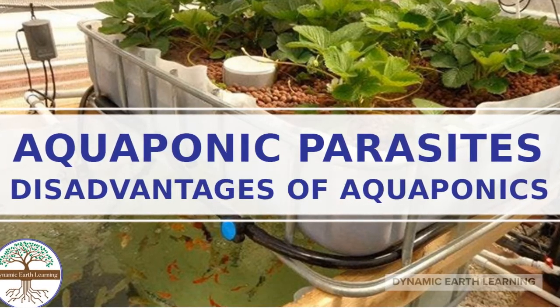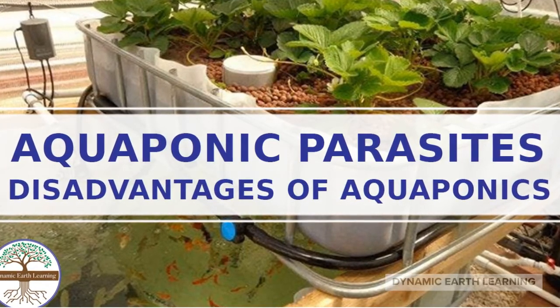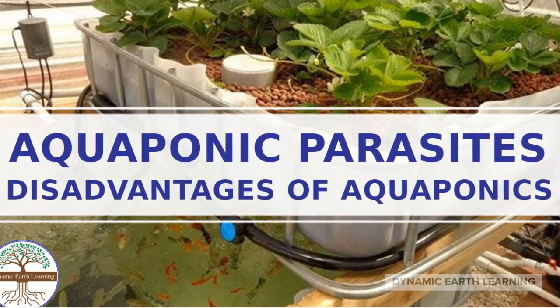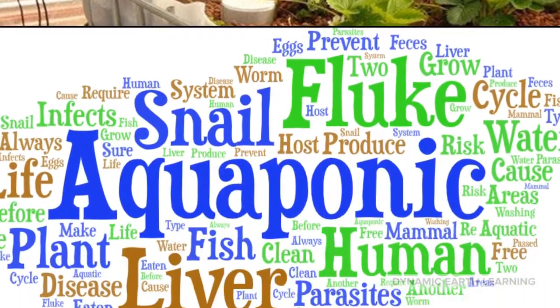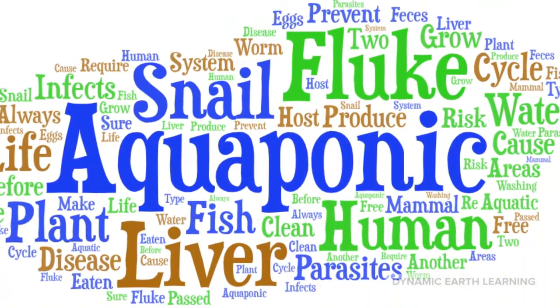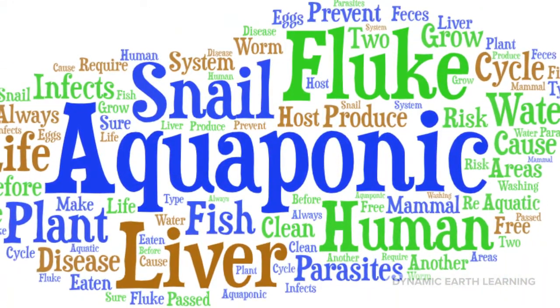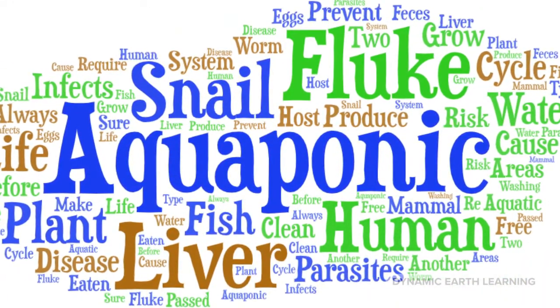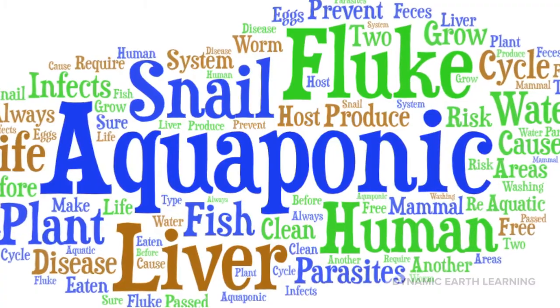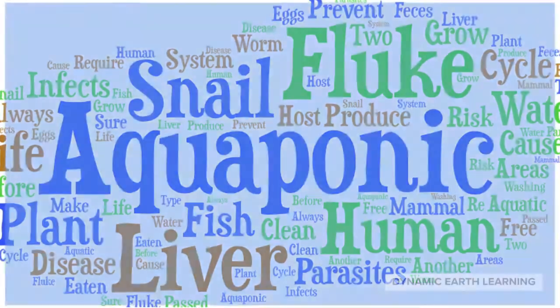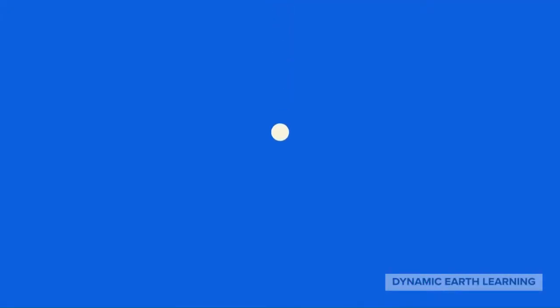Aquaponics in human disease: parasites and liver flukes. Aquaponics refers to the relationship between water, aquatic organisms, bacteria, nutritional dynamics, and plants that grow together in water areas worldwide.